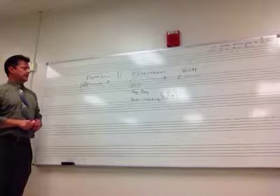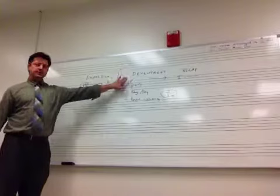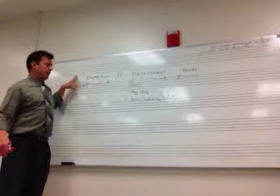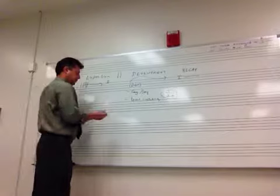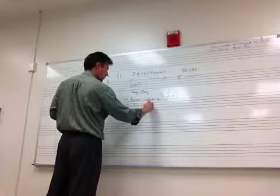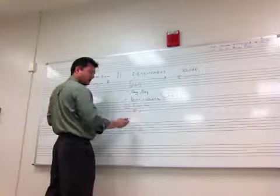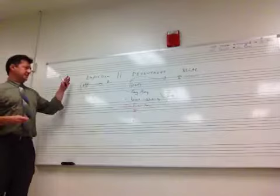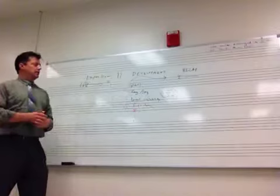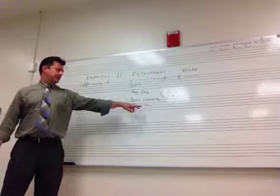The development typically starts with the very first theme we heard, but generally in a different key. If we have the first theme, it might be in the key of the dominant, because we just left the dominant. Sometimes it's in the minor dominant, sometimes in the minor tonic or the relative minor. Particularly if it's a major-key sonata exposition, the development often starts with a minor key.